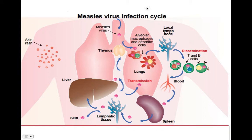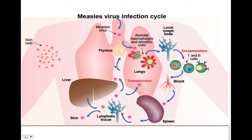For the measles virus infection pathway: the virus enters alveolar macrophages and dendritic cells in the lungs, goes to the local lymph node, disseminates into T and B cells, goes into the blood, and secondary viremia is caught by the spleen and liver since they filter all the blood. It's then released into the lymphatic tissue and transmitted back out of the individual. The skin rash probably develops during the secondary viremia phase, since you're going to have so much more virus circulating.